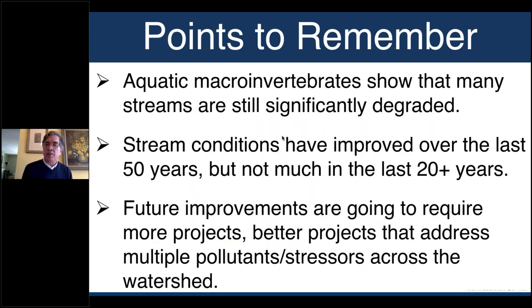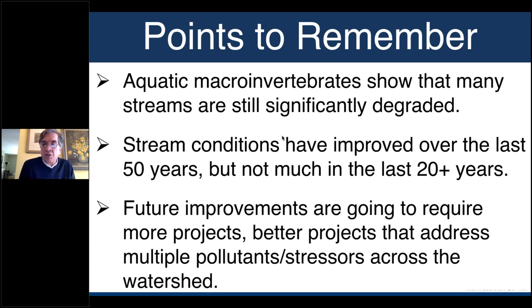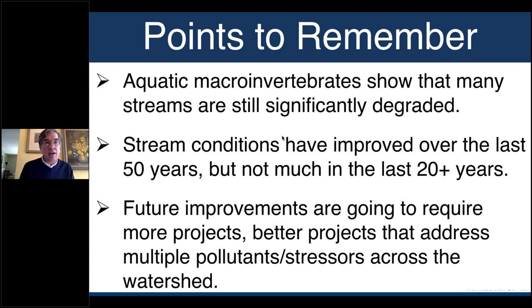Things to remember: aquatic macroinvertebrates show that many of our streams are still significantly degraded — it's a big loss of biodiversity, and that framing is powerful when asking for improvements. Our work in these watersheds is a positive story — they've improved a lot in the last 50 years, our regulations and practices are better than they were. However, we're not seeing the improvements we'd expect from the last 20-plus years, and we need to own that. To see more improvements, we need more projects and better projects that address multiple stressors and pollutants across the watershed. Fixing one farm out of 50 or 20 is not going to delist the stream.